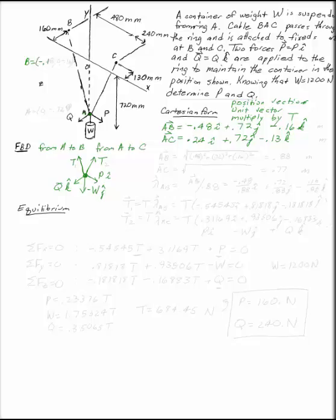In this case, our B point is at negative 0.48, 0, negative 0.16, and A is at 0, negative 0.72, 0. Once you have those locations, you can find the position vector.